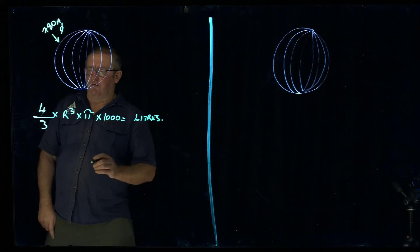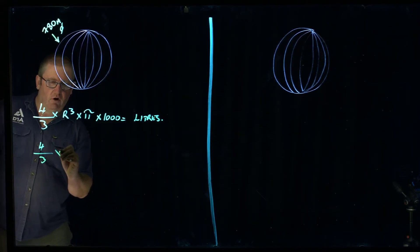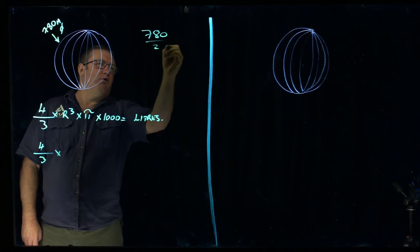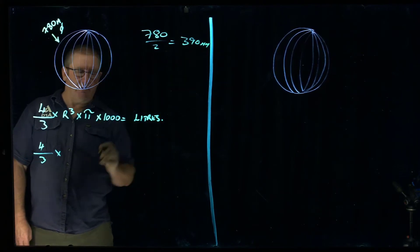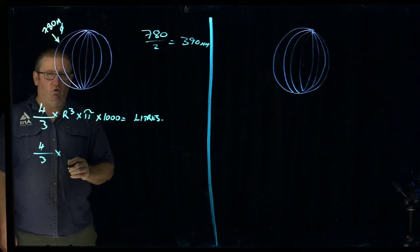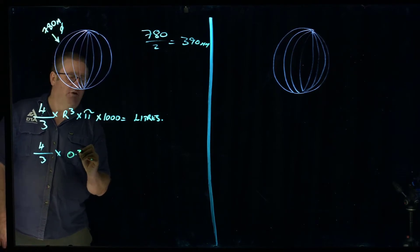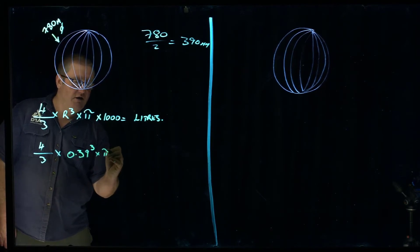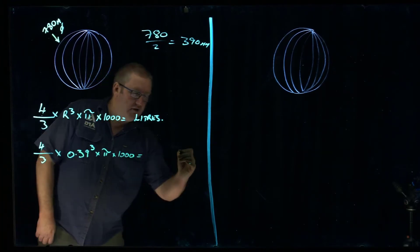So if we've got 4 over 3 times the radius, so half of 780 divided by 2 equals 390 millimetres. We're going to put it in as metres so that we can automatically convert to litres. So it is 0.39 cubed times pi times 1,000 equals our litres.